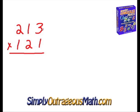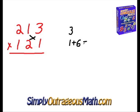We first start off by multiplying the first digits: three times one, and that gives us three. Then we do a cross multiplication for our next step. One times one is one, and two times three equals six. We add those together to get seven. So we have three here and seven here.